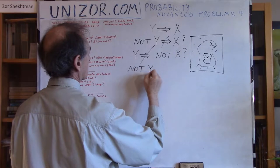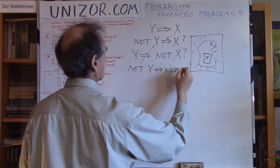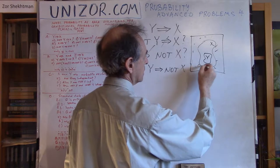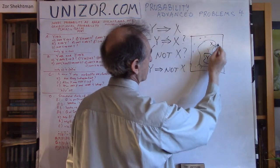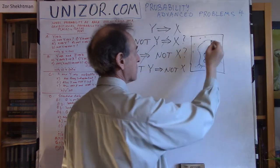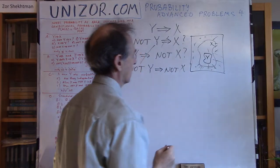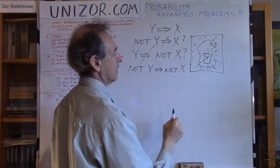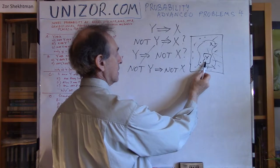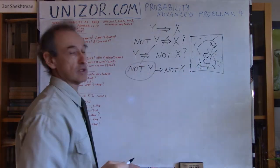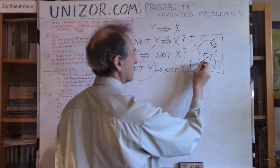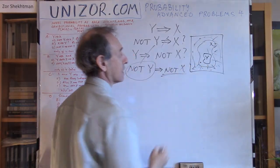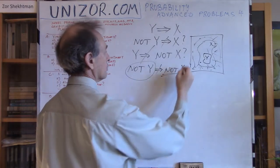NOT Y follows NOT X — is this true? NOT Y means the point is outside Y. NOT X means it's outside X. But consider a point which is in X but not in Y — it satisfies NOT Y. Does it automatically mean it's in NOT X? No, NOT X is outside this area and the point is inside X. So that's also not true — false.